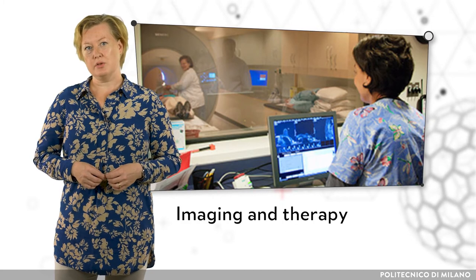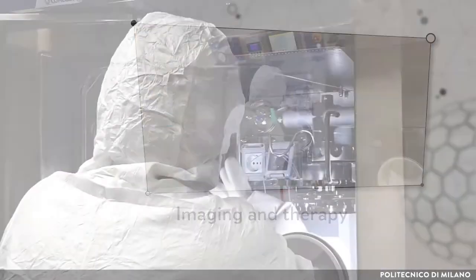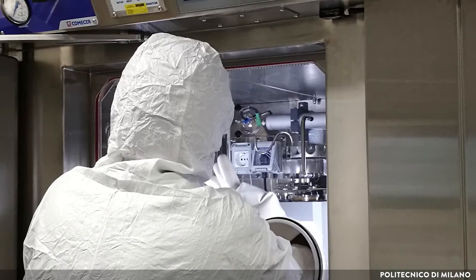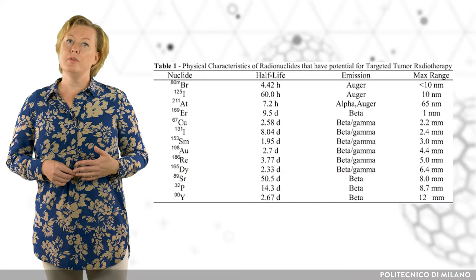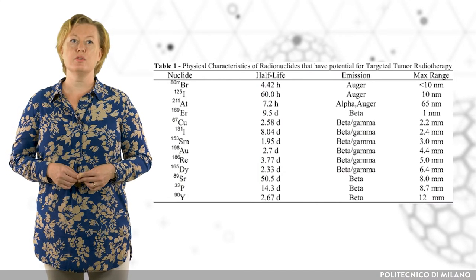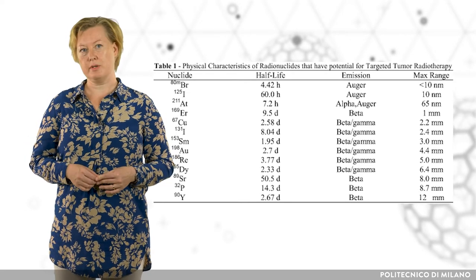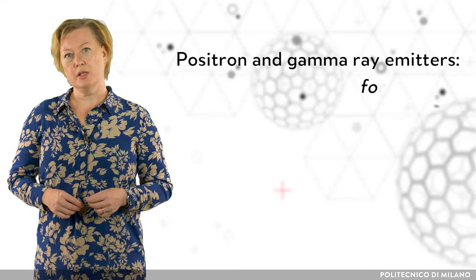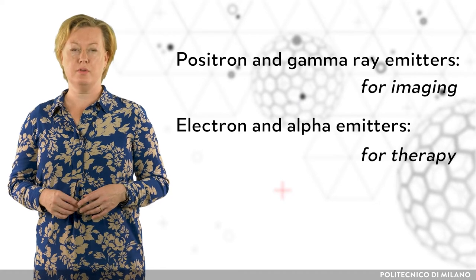Based on the application, nuclear medicine can be broadly classified into diagnostic imaging and therapy. They both are based on the use of radiopharmaceuticals. For both imaging and therapy, the selection of the right radioisotope depends on the emitted radiation type and on their chemistry. Positron and gamma ray emitters are typically used for imaging, whereas electron and alpha emitters are more suited for therapy.